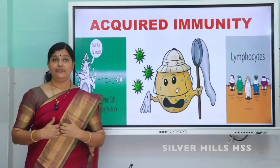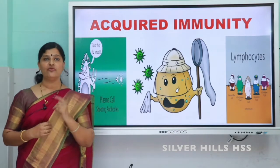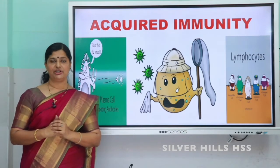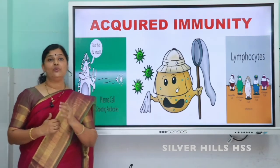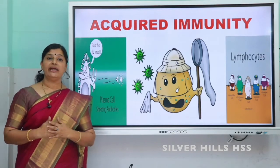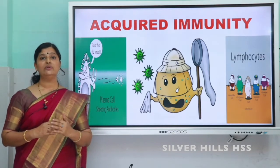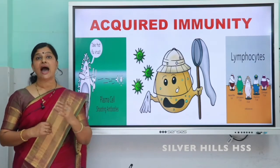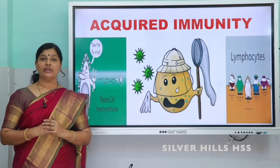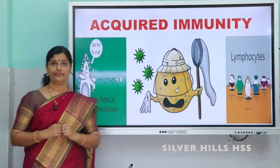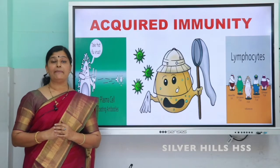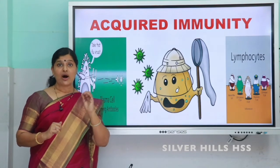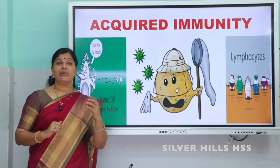Our body's WBC called lymphocytes will identify that protein, which is called an antigen. Our body's lymphocytes will identify the antigen and produce a protein to kill it, and that protein is called an antibody. So the lymphocytes will produce the antibody. But sometimes what happens is when our immune system is not so strong, or sometimes the virus that has entered might be a strong one.